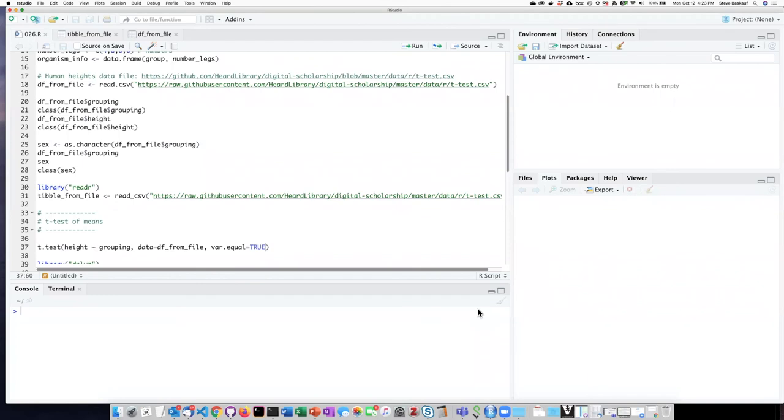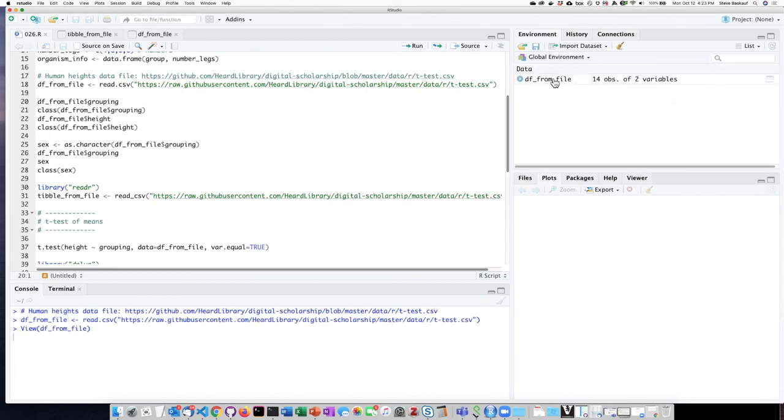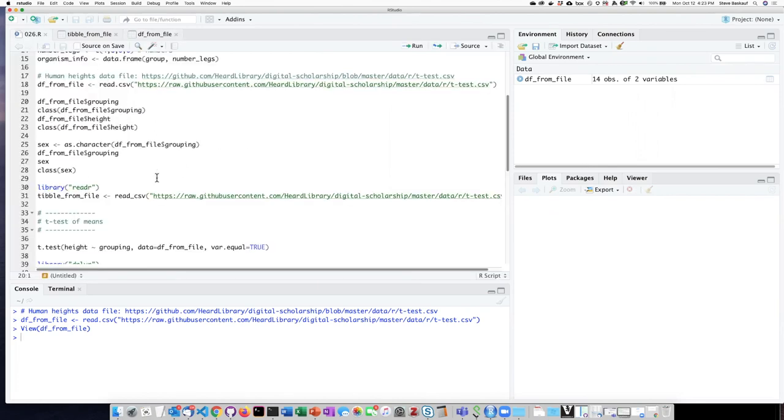In order to make things a little less messy, I've used the little broom icon here to clear out my global environment and also my console window. So that means I'm going to have to read the data from the internet back in again. So I've gone ahead and done that. Here's our data of heights of men and women that we had before. To run the t-test of means, we simply give the name of the data frame and then have our two columns that we want to use.